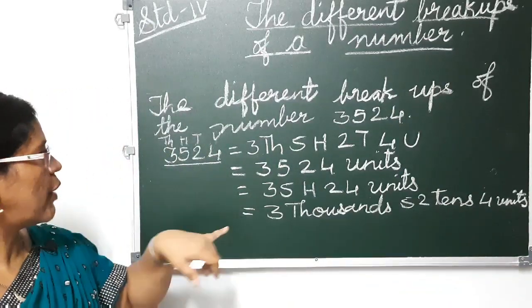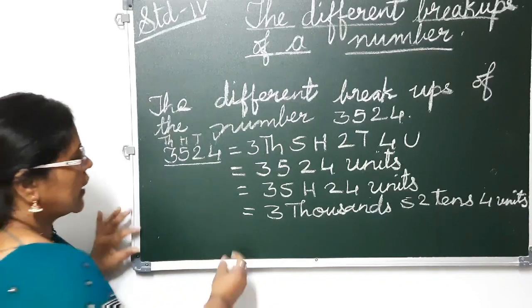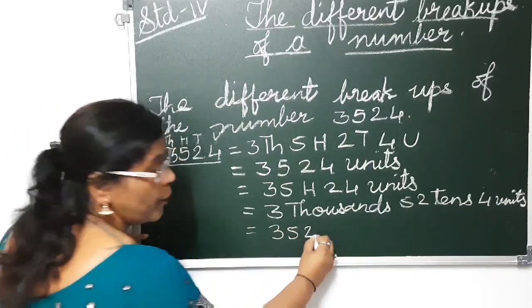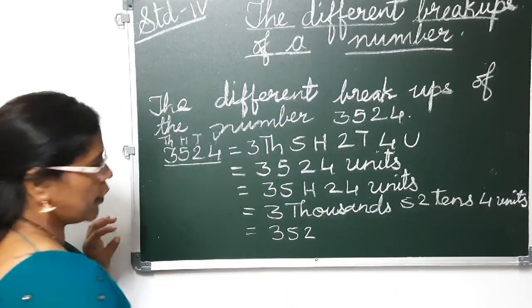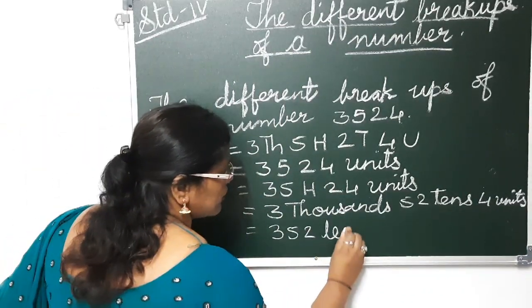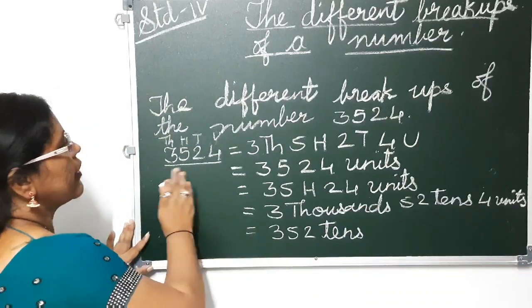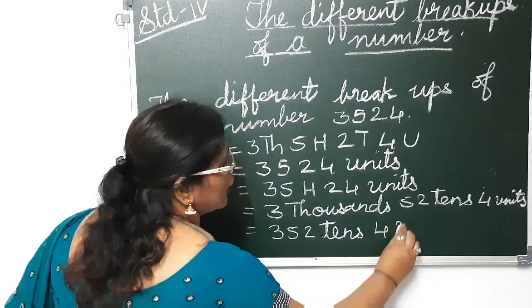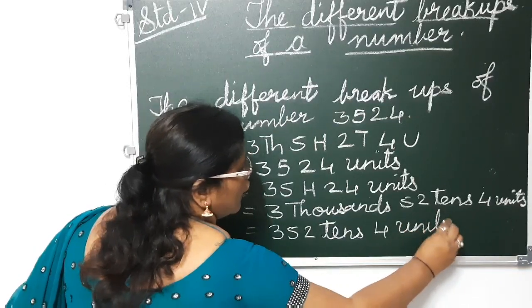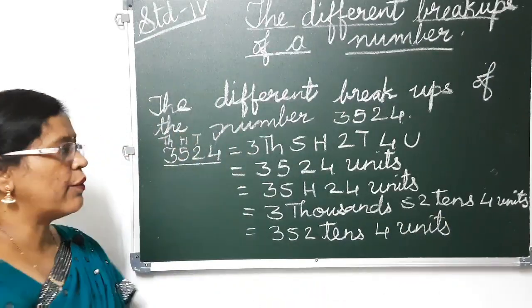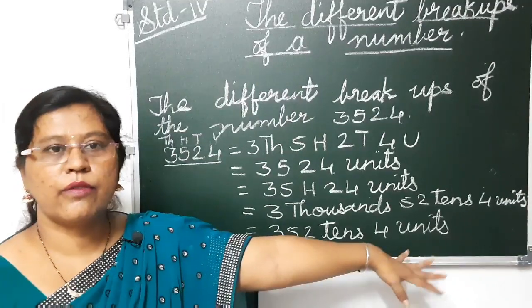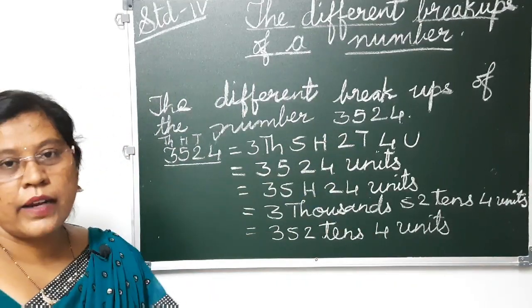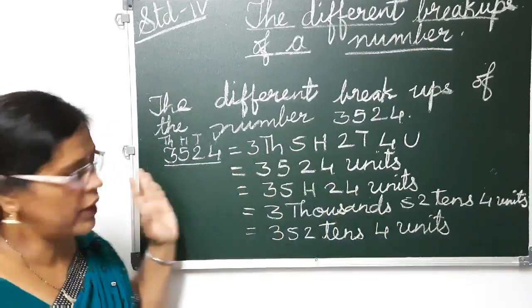The next break up will be 352 tens plus 4 units. You can have 4 one-rupee coins as 4 units. So this is one 4-digit break up. Understood?